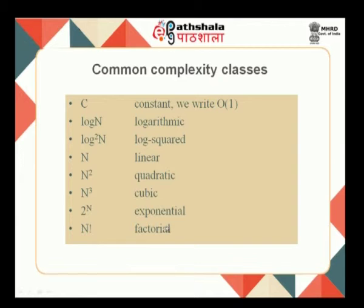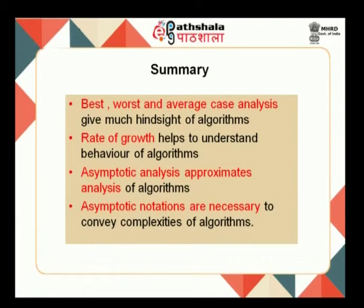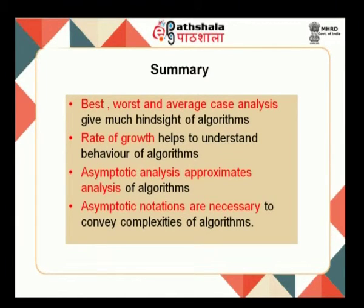In summary: worst case, best case, and average case are required to express T(n) aptly; the rate of growth is important to compare various algorithms; T(n) expressions can be simplified using approximation called asymptotic analysis; and the results are expressed using asymptotic notations. In the next module we are going to discuss how this concept of analysis can be extended for recursive algorithms. Thank you very much.